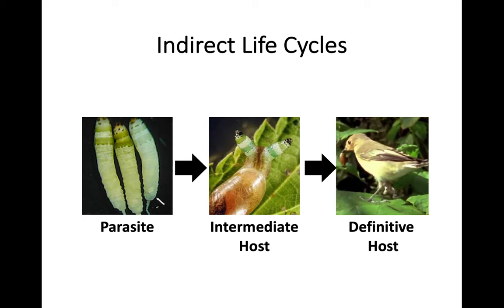The snail then puts itself in quite an exposed position, and then a bird — which was always meant to be the definitive or final host — comes across, thinks they're caterpillars, and eats them. Now that bird is infected with the parasite. This is actually a life cycle — it does not end with the definitive host. The parasite has a relationship with the bird, reaches maturity, and lays eggs. The bird excretes the eggs, a snail eats the infected droppings, and the cycle continues.